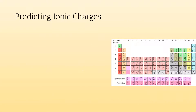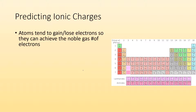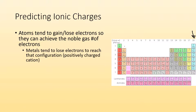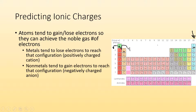So how do you predict ionic charges? How do you know what the charge of that atom is going to become when it gains or loses electrons? They tend to gain or lose electrons so they can achieve the group 18 noble gas configuration — they like having the same number of electrons as a noble gas. For metals, they tend to lose electrons. Beryllium wants to be like helium, but it has four electrons and helium only has two, so it's going to lose two electrons to end up like helium.